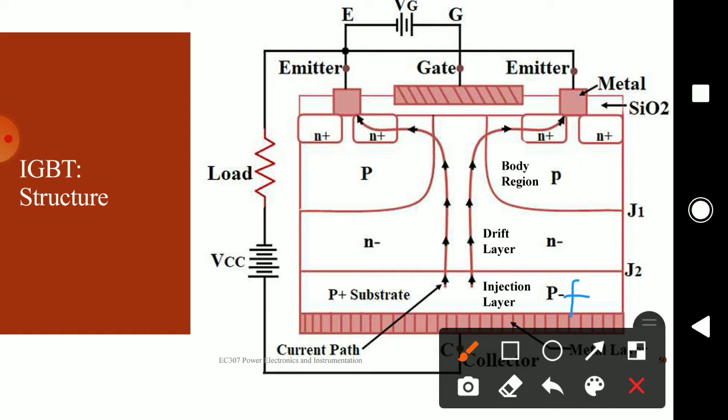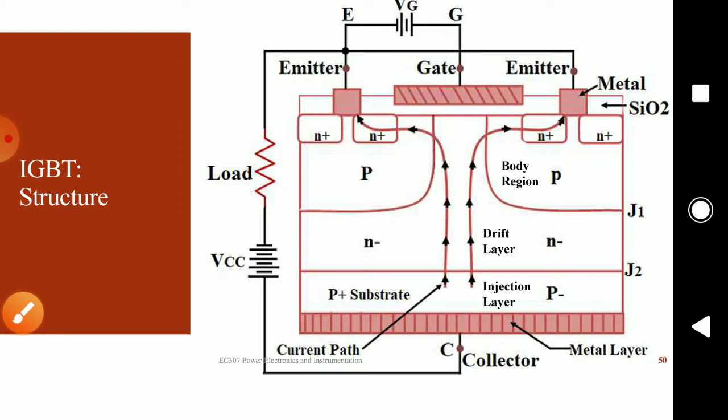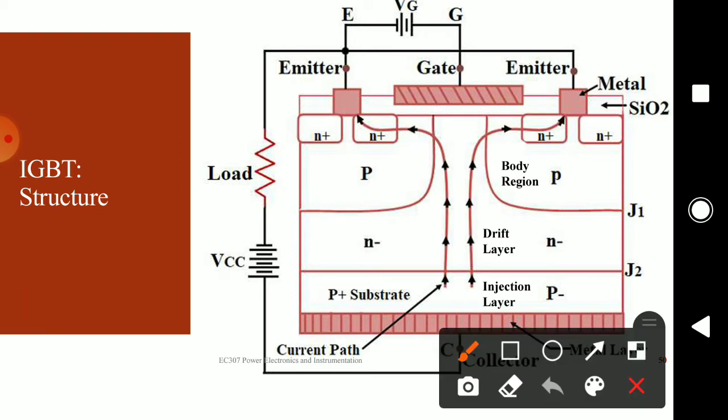Right above the N-minus layer, you have the P region which is called the body region. It has been diffused into the N-minus layer. Above the P, within the P region, you have the N-plus layer, which has also been diffused into the P region.